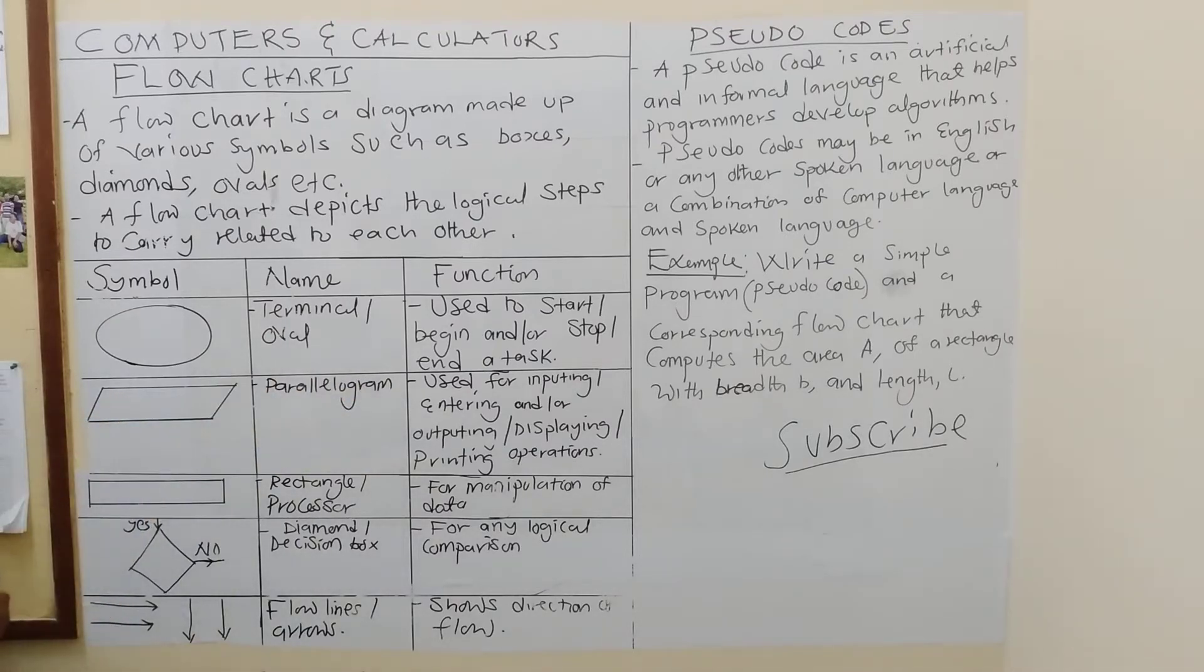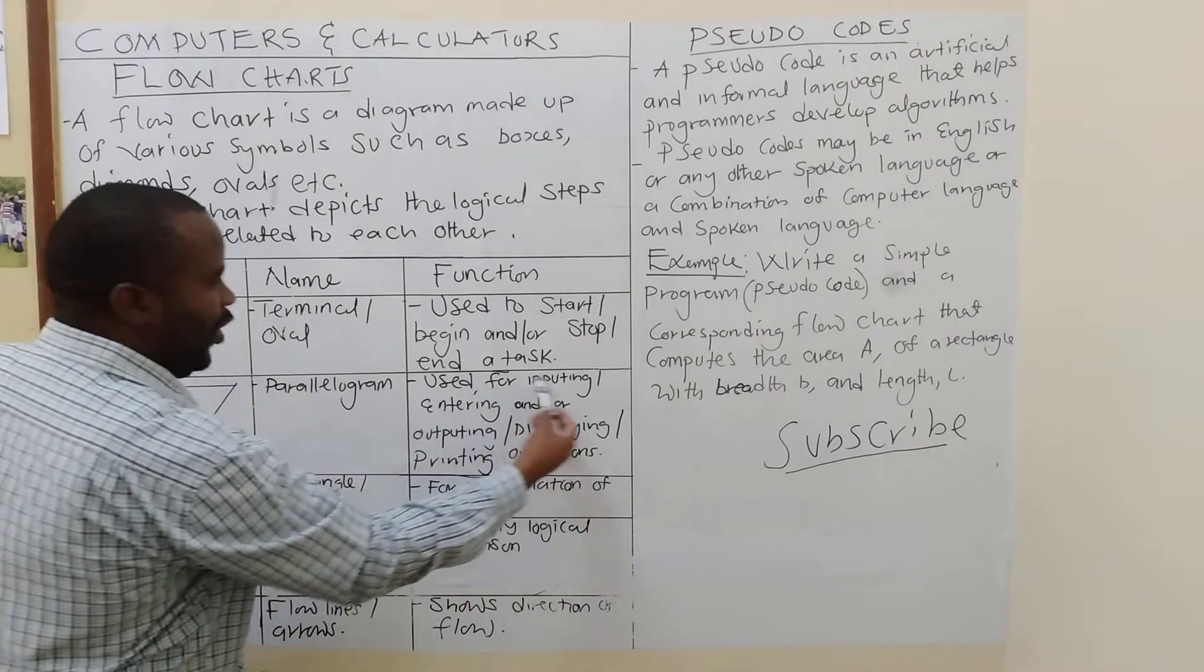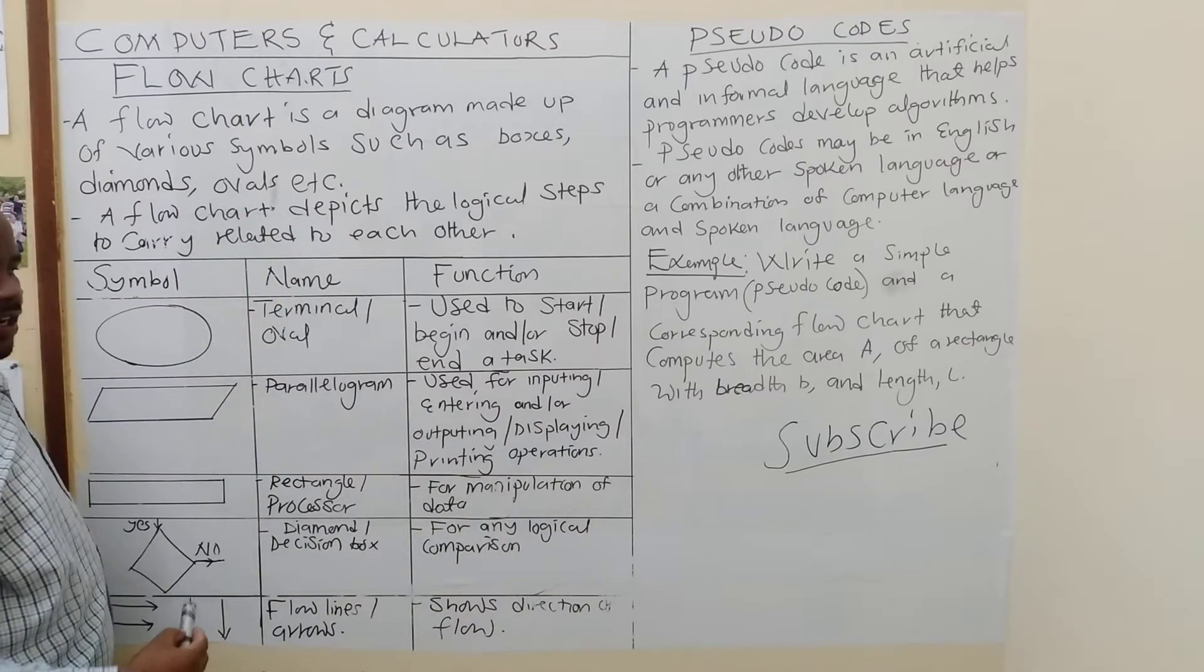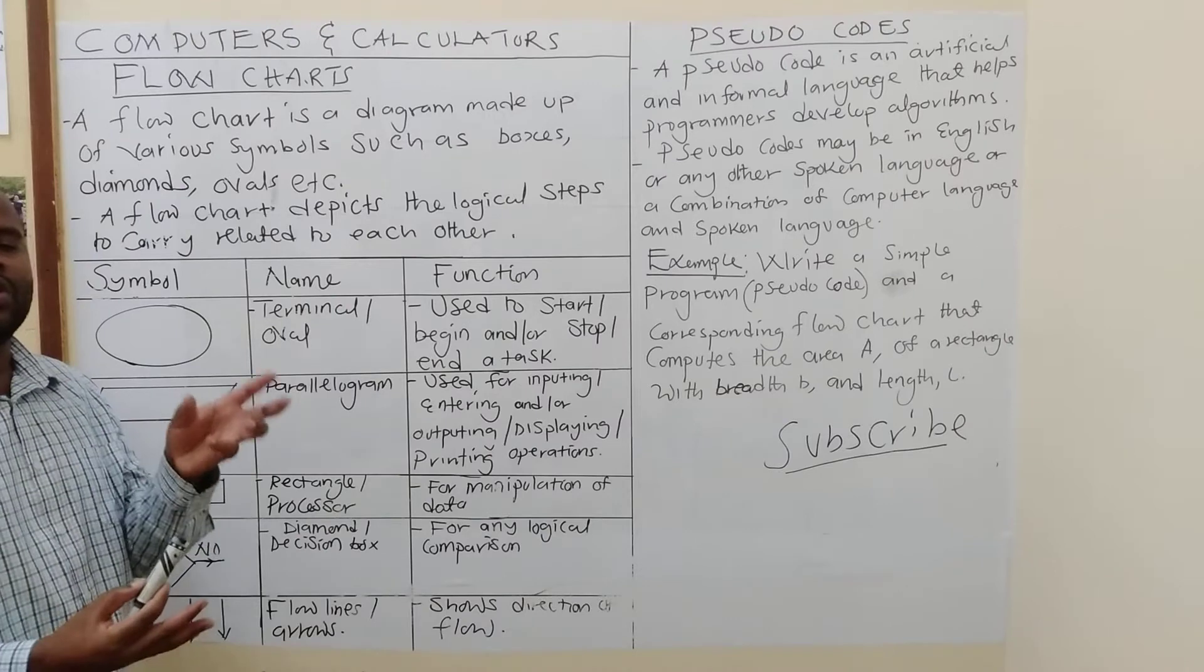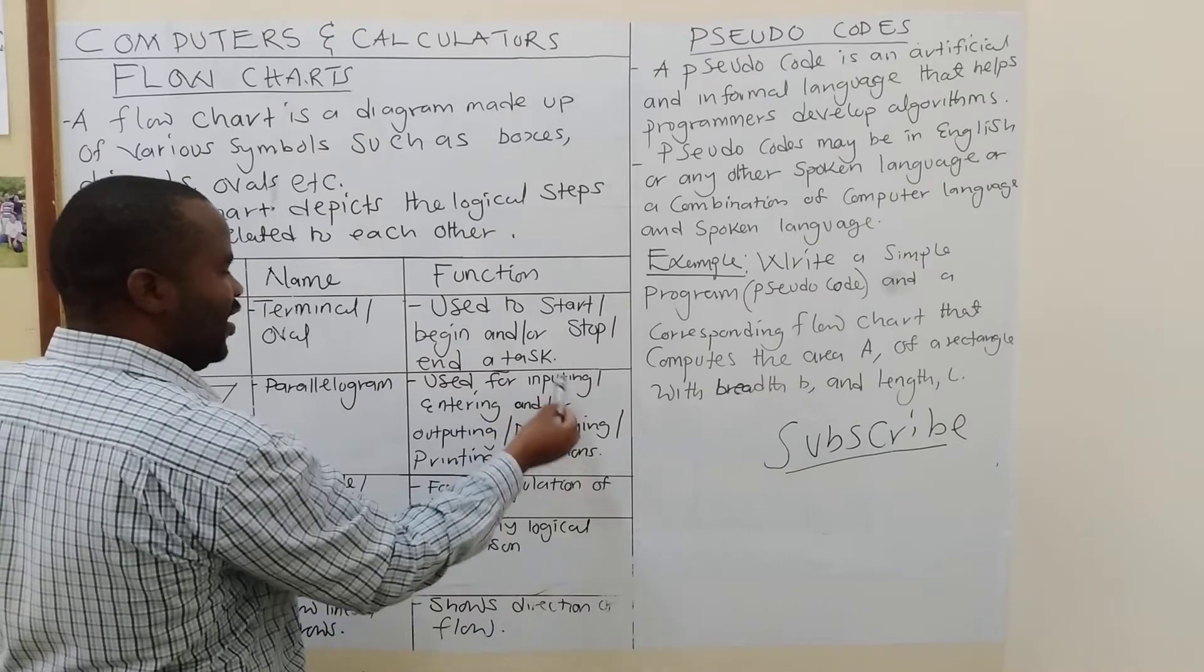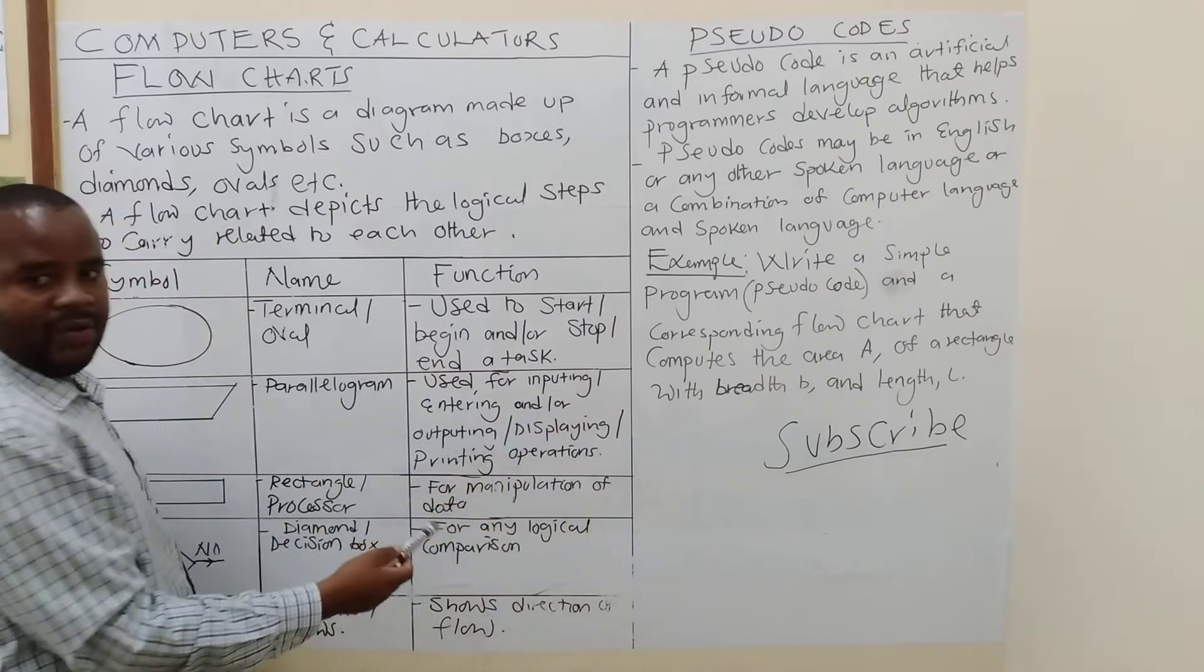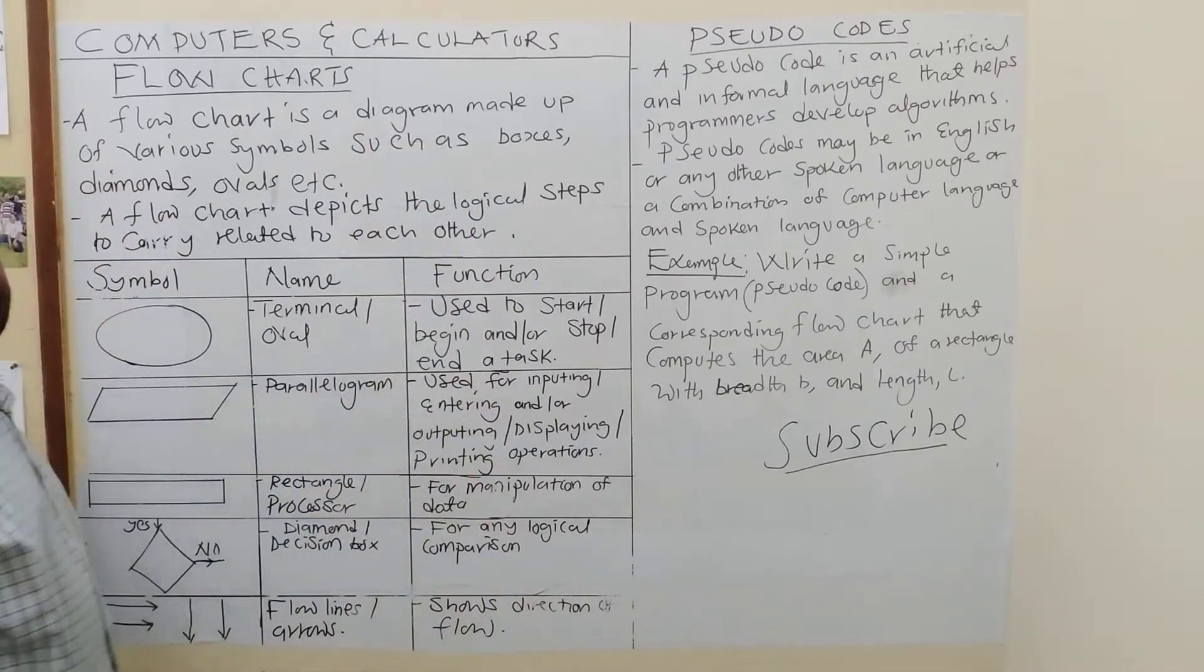So, each time you are starting or ending a program, you will see an oval. Then, the next symbol is this one, which we are calling a parallelogram. What is the essence of this parallelogram? Used for inputting. Instead of inputting, you can say entering. You enter the things that you want to use to process a problem. So, it is used for inputting, entering and or outputting. Instead of outputting, you can say display or print operations.